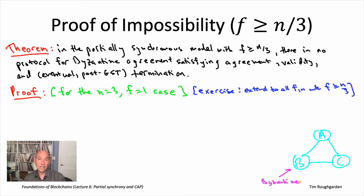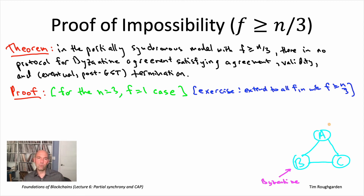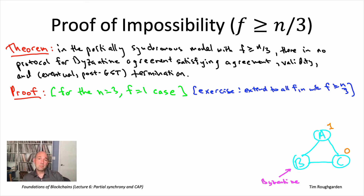So we have N equals three nodes. Let's call those nodes Alice, Bob, and Carol, and visualize them as a light blue triangle. B will stand not only for Bob but also for Byzantine — so the Byzantine node will be the one on the lower left. We're thinking about the Byzantine agreement problem where each of the nodes gets its own private input. Alice starts with a private input of one, Carol starts with a zero. Bob's Byzantine and can just lie about whatever its private input is, so we don't really think about its private input. Let's proceed by contradiction: assume there's a Byzantine agreement protocol that satisfies agreement, validity, and eventual termination, and derive from that assumption a contradiction.